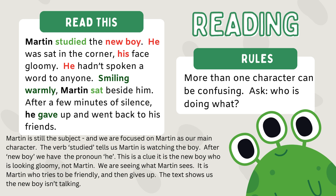Now we have the pronoun 'he,' and it's difficult to know whether this 'he' relates to Martin or the new boy. But often the pronoun refers to the last person talked about. So we look and think: 'he' seems to relate to the new boy. He was sat in the corner, his face was gloomy. So it's the new boy who was sat in the corner and the new boy whose face was gloomy. He hadn't spoken a word to anyone. Once again, 'he' comes after 'the new boy' and 'his,' so this suggests it's still about the new boy.